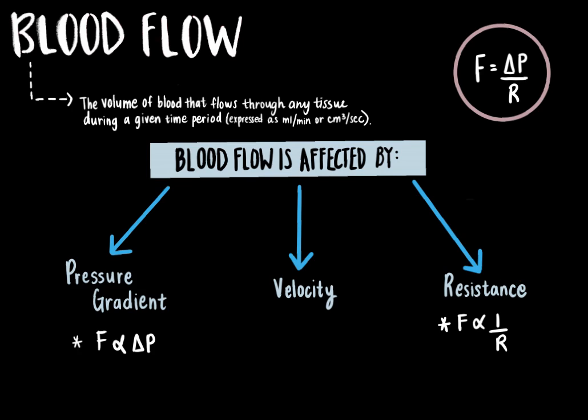The relationship between blood flow and the two most adjustable main factors — pressure gradient and resistance — can be explained by this equation: flow is equal to the change in pressure divided by the resistance. Blood flow is directly proportional to the pressure gradient and inversely proportional to resistance. The greater the pressure gradient, the greater the blood flow; the greater the resistance, the lower the blood flow.